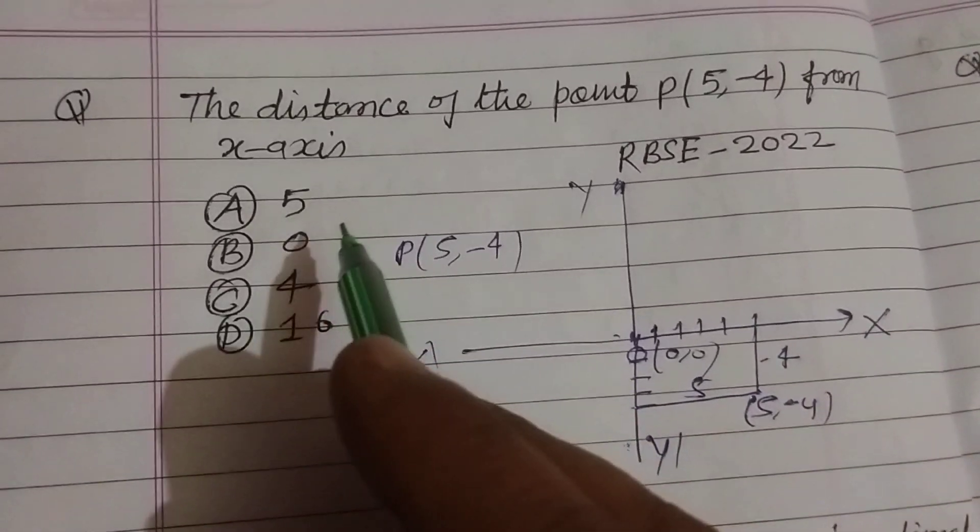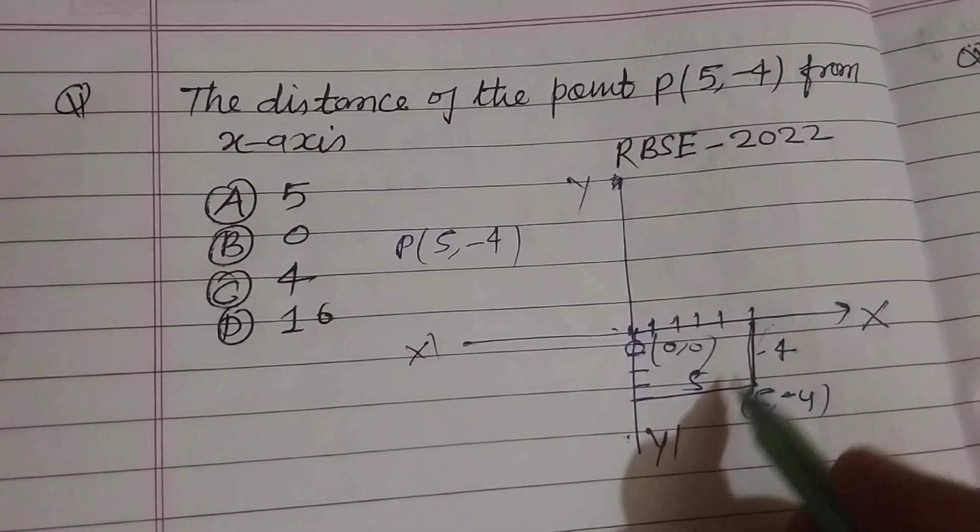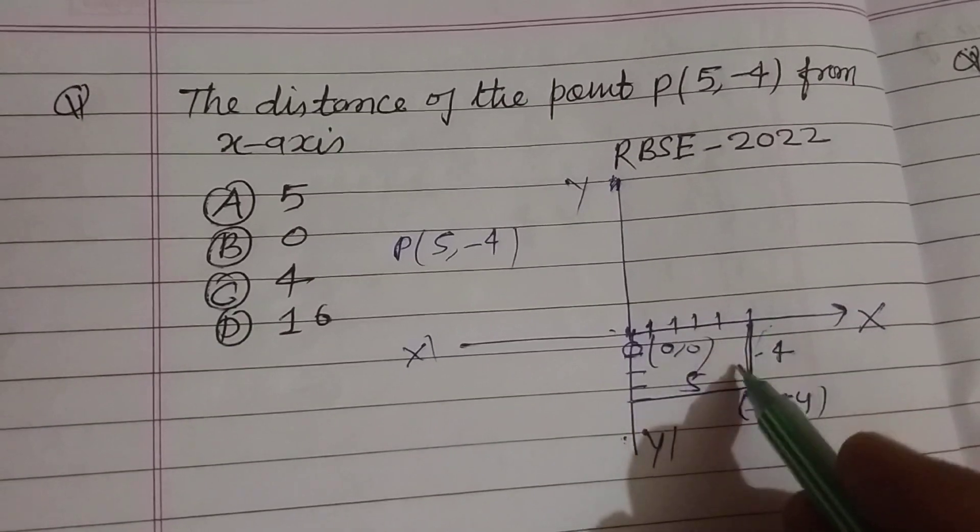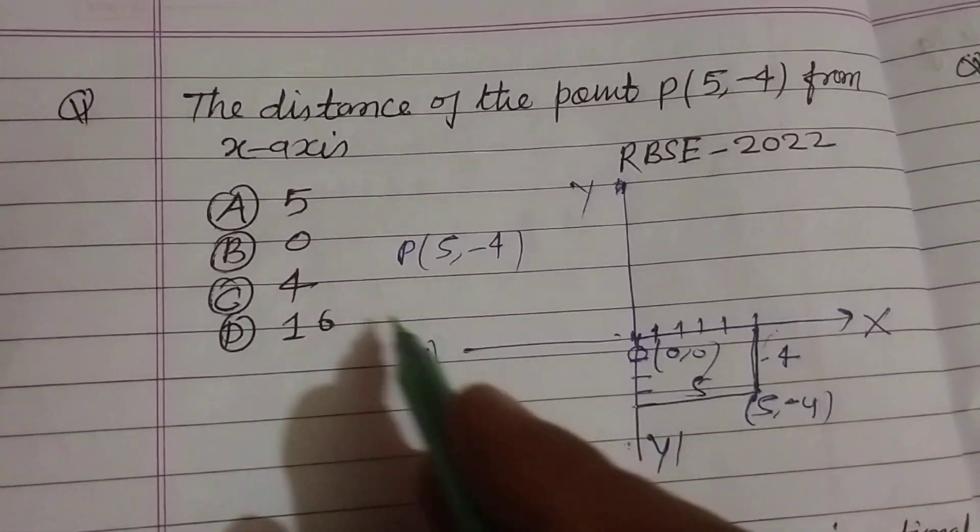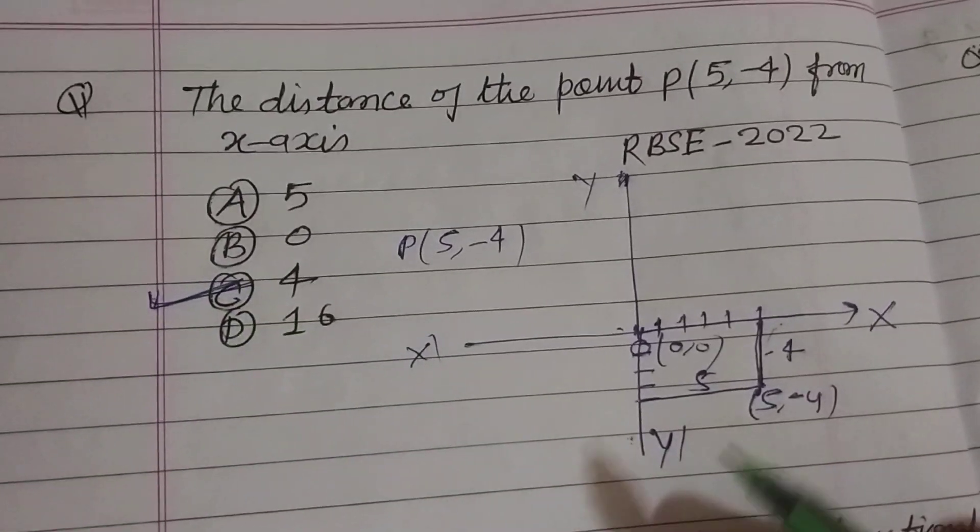The question is asking the distance of the point from x-axis. So minus 4 is the distance of this point from x-axis. So the answer to this question is C, 4.